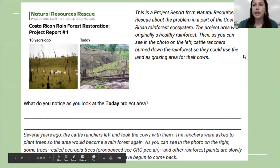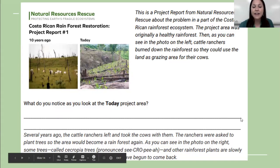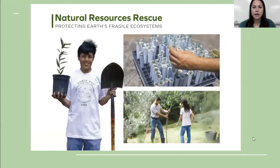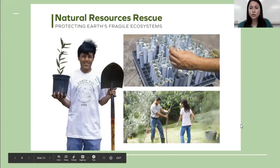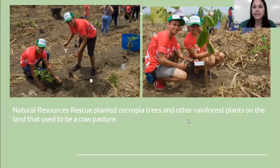This is a project report from the Natural Resources Rescue. The project was originally a healthy rainforest. Then the cattle ranchers burned it down so they could use the land for grazing cows. Several years ago the cattle ranchers left and took the cows with them. The ranchers were asked to plant trees so the area would grow again. They planted cecropia trees, but they're growing very slowly. So the Natural Resources Rescue brought in volunteers to plant more cecropia trees and other rainforest plants on the land that used to be a cow pasture.